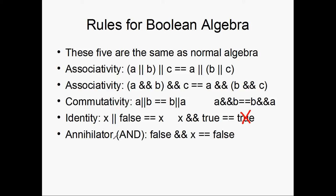And then we have the annihilator, which is just fancy for multiplying by zero. So false && x == false.